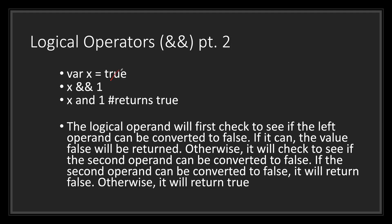Let's see what will happen to the logical operator if our variable x is now false. With x being false, our logical operator will first check the left operand and check if it can be converted to false. Since x is false, the logical operator won't even bother checking the right operand — it will just return false. It's good to know how the logical operand operates in your programming. It makes it easier to debug your code when you know which values the logical operand is checking first, and then second.